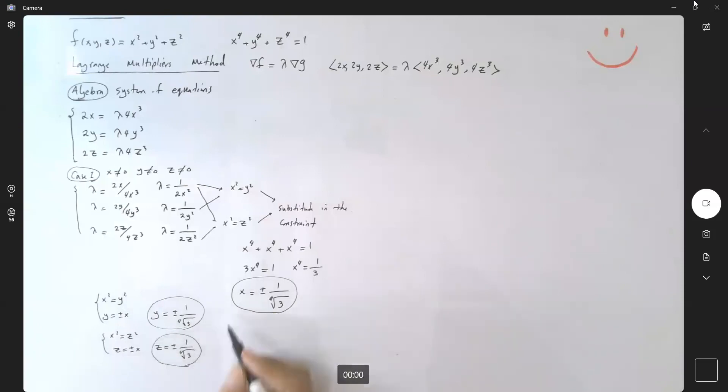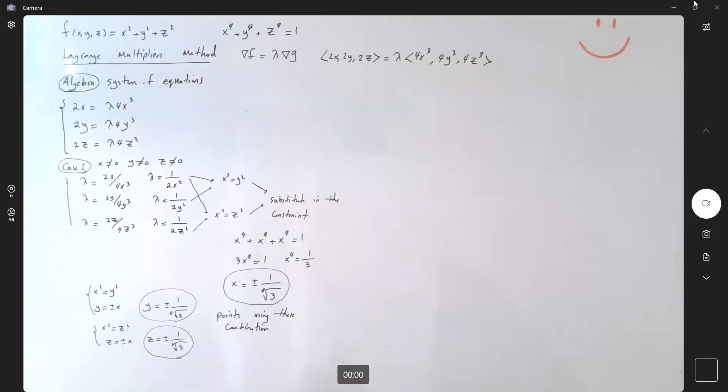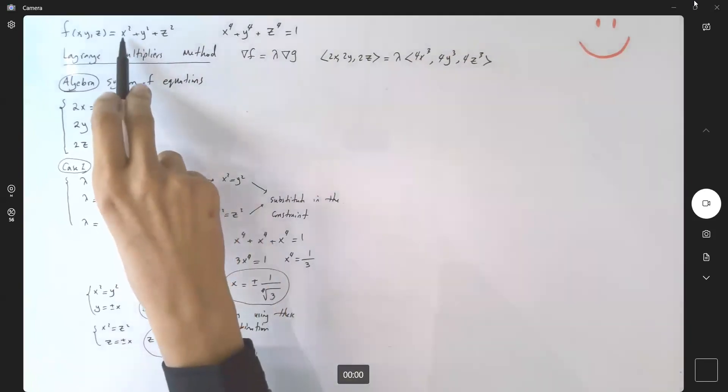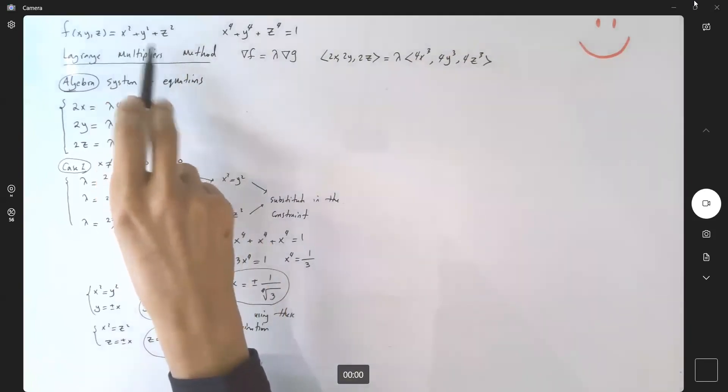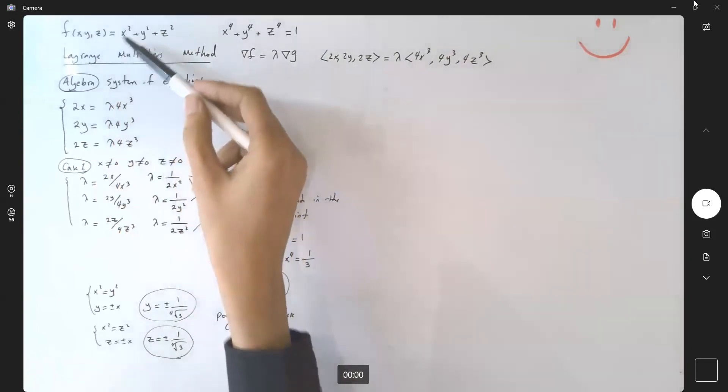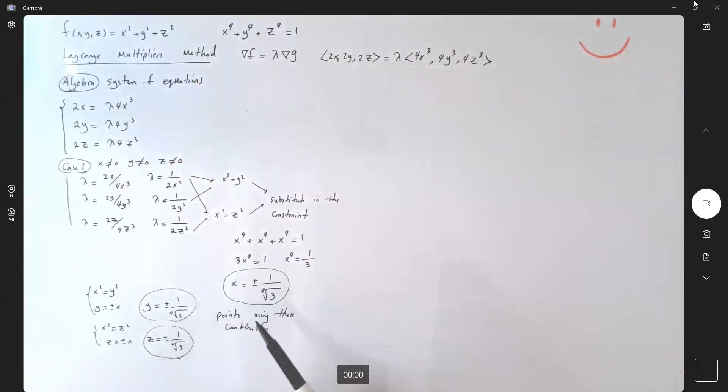Now we need to find all combinations of these points. If you plug these combinations into the original function to find the output value, for example, just one of these points—since you have exponent 2, all the negatives disappear, right?